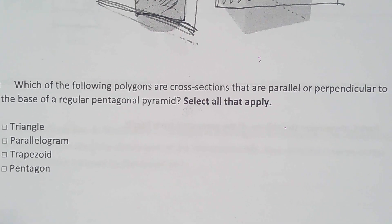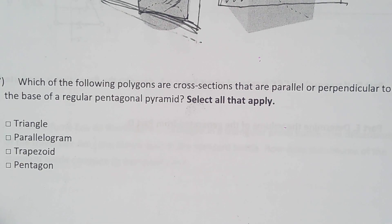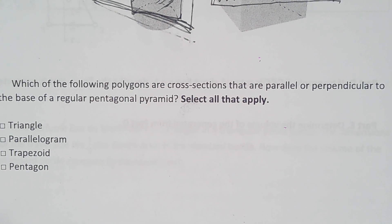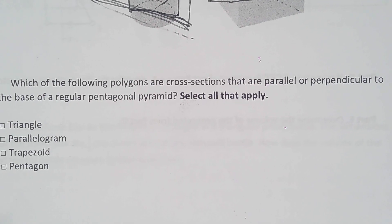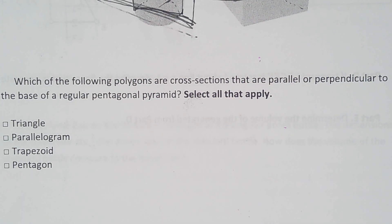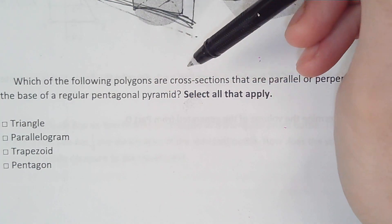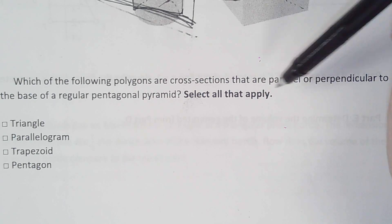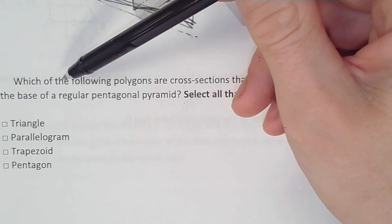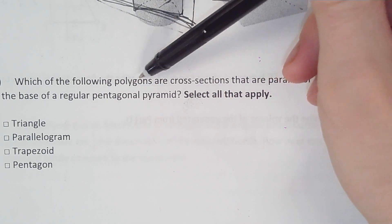Which of the following polygons are cross-sections parallel or perpendicular to the base of a regular pentagonal pyramid? Check all that apply. So a pentagonal pyramid — penta means five — has five sides going up to a point.